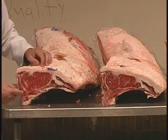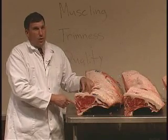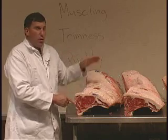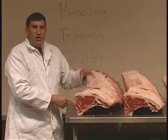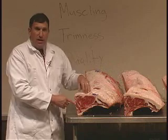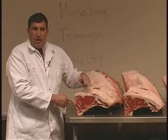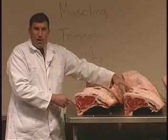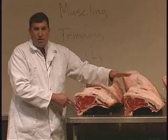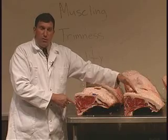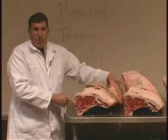As far as quality grade, these two cuts may be fairly similar. Don't be fooled into only looking at one place — you need to look at the sirloin end as well as the rest of the cuts. Generally, if they are in the same quality grade category — whether prime, top choice, low choice, select, or standard — then you're going to place them according to trimness and muscling. Look at trimness first, and if they're close on trimness, then place them on muscling.